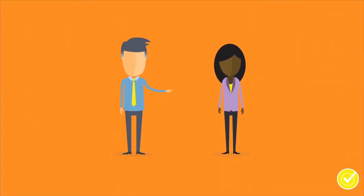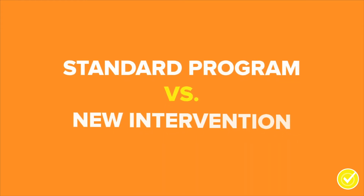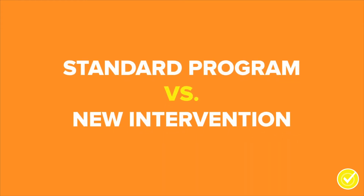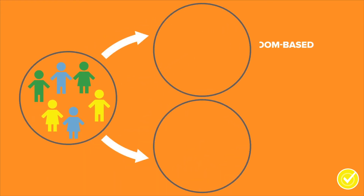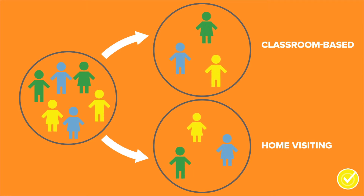In order to do a good job of comparing the standard program with the new intervention, we used a lottery process to assign all parents referred to the agency to either the classroom-based program or the new home visiting program. This random assignment helped to ensure that the two groups of parents were as similar as possible. For example, the lottery system protected against the possibility that parents in the new home visiting program were more motivated at the start than parents in the regular program.